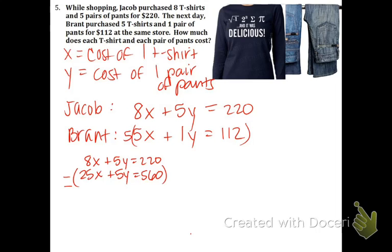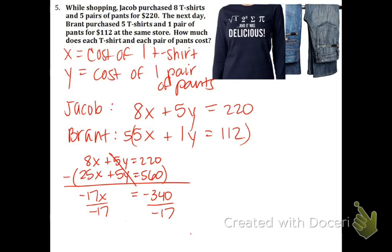Subtract — use parentheses. You must share the subtraction symbol with everything inside. So we get 8x minus 25x, that is negative 17x. 5y minus itself cancels out — there should always be a canceling moment. And 220 minus 560 is negative 340. One step equation: divide both sides by negative 17 and we get x equals 20. So that means a t-shirt is worth $20 at this store.